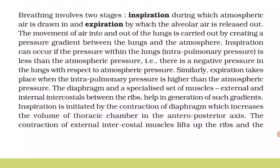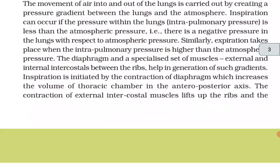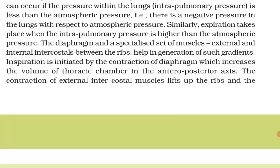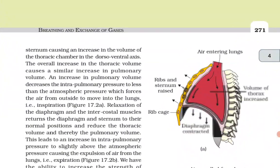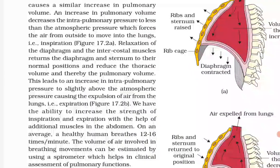Similarly, expiration takes place when the intra-pulmonary pressure is higher than the atmospheric pressure. The diaphragm and a specialized set of muscles — external and internal intercostal muscles between the ribs — help in generating such gradients. Inspiration is initiated by the contraction of the diaphragm, which increases the volume of the thoracic chamber in the antero-posterior axis. Contraction of the external intercostal muscles lifts the ribs and the sternum, causing an increase in the volume of the thoracic chamber in the dorso-ventral axis.